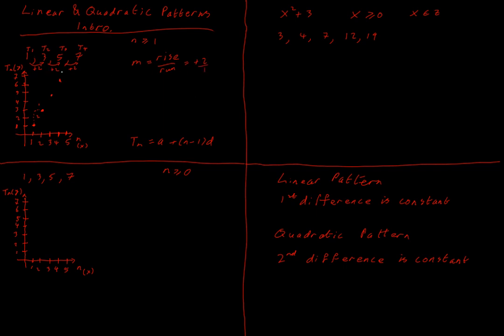So to find the slope of the linear pattern we're producing, we just look for the first difference. The slope is going to be our first difference. And for reasons that will become obvious later, this can also be thought of as a rate of change — how quickly the pattern is changing. That idea will be important later.